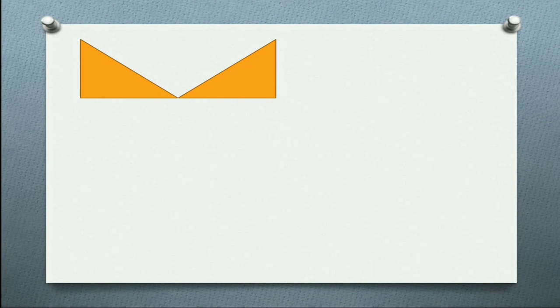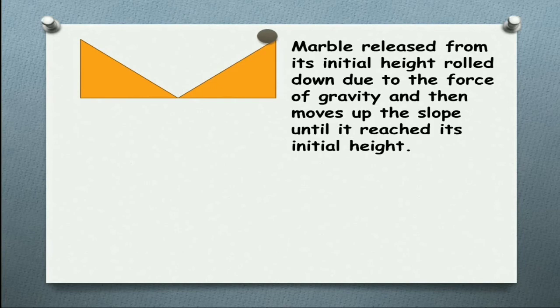He did one more experiment with inclined planes as shown in the figure. He took one inclined plane and an upward inclined plane. The ball rolls down due to gravitational force and then moves to the upward inclined plane. The marble released from its initial height rolled down due to the force of gravity and then moves up the slope until it reaches the initial height.